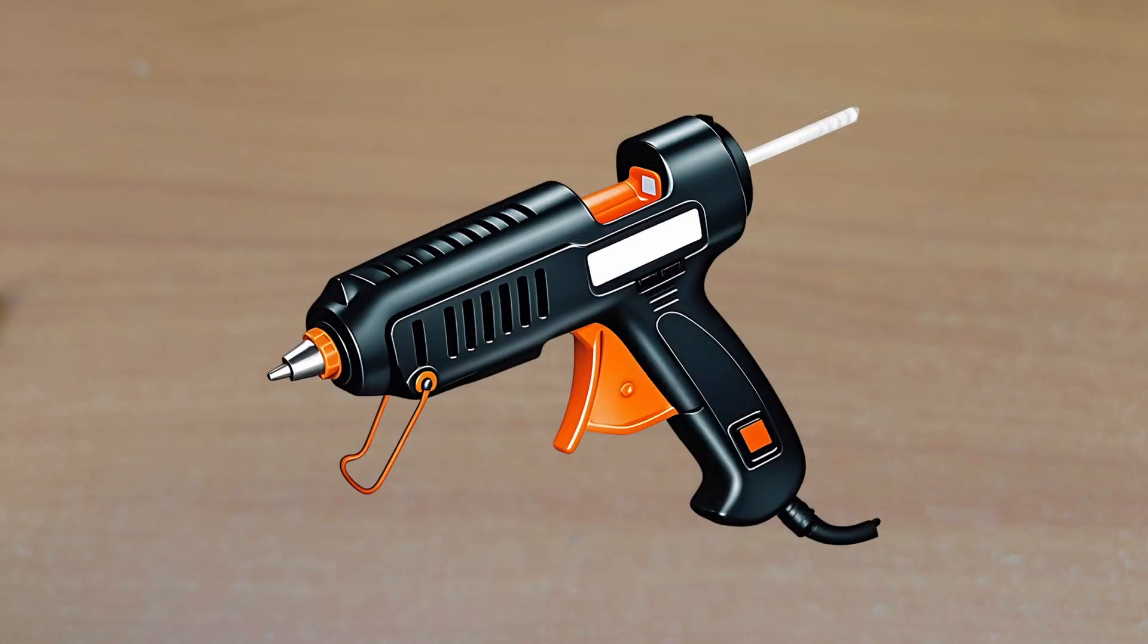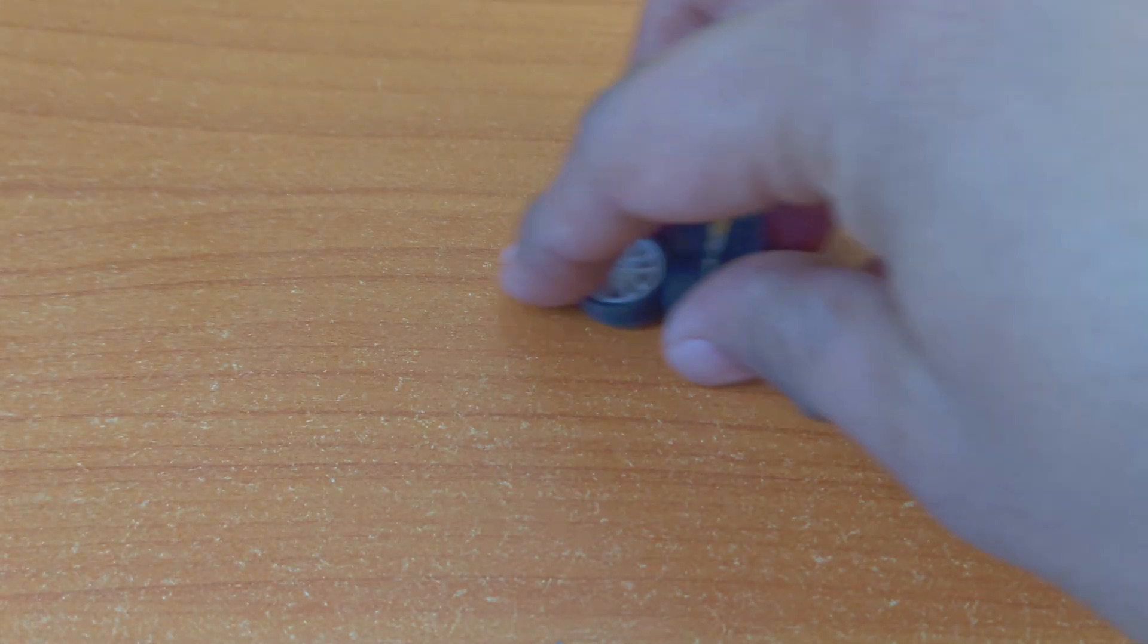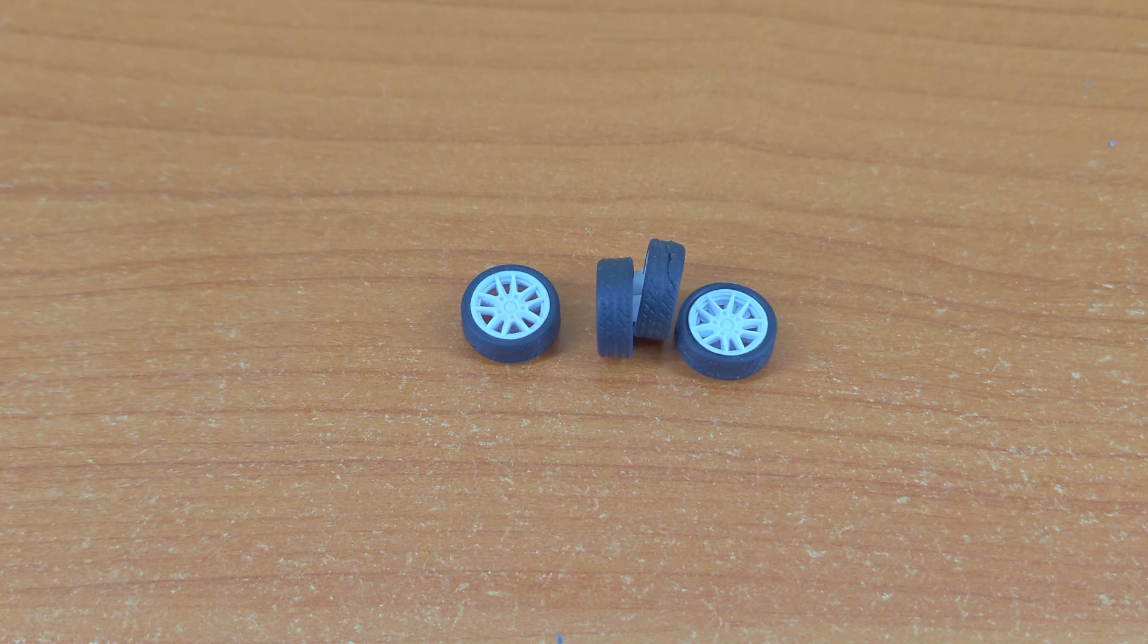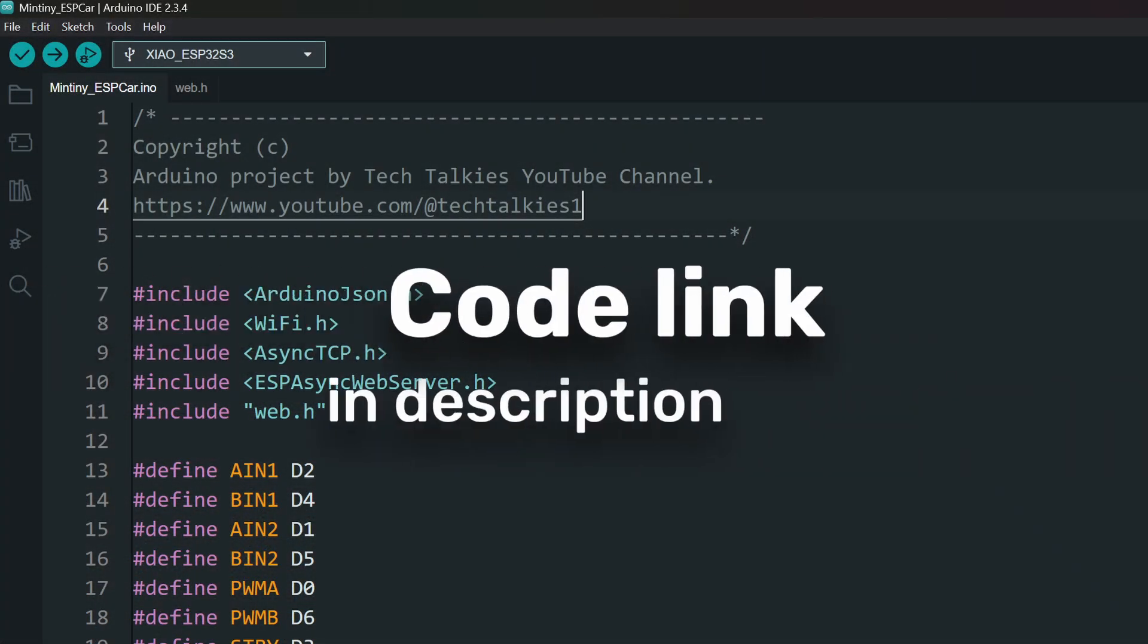Alternatively, you can also use a hot glue gun to stick them onto the box. And four tiny wheels - I took them off an old toy car. The code link is in the description. Download and open it in Arduino IDE.